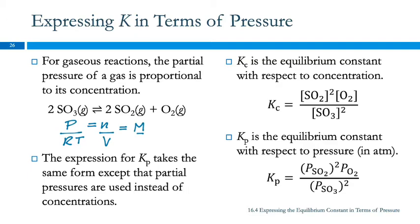We can also express the equilibrium constant with pressures instead of concentrations, and it takes the same form, but it's not necessarily the same value. We use the subscript C for the equilibrium constant with respect to concentration — Kc — and Kp for the equilibrium constant with respect to pressure, using atmospheres. The equation takes the same form, where everything is raised to a power equal to its coefficient.